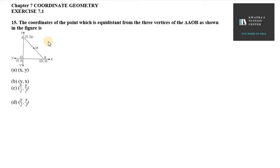Hello everyone, let's start with question number 15. It says the coordinates of the point which is equidistant from the three vertices of the triangle AOB as shown in the figure.